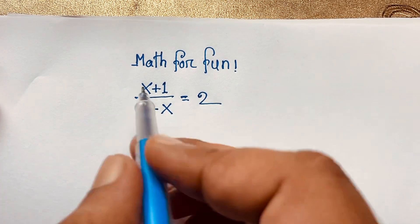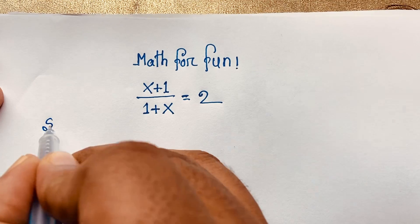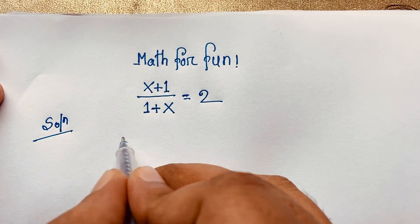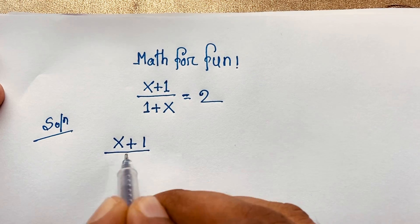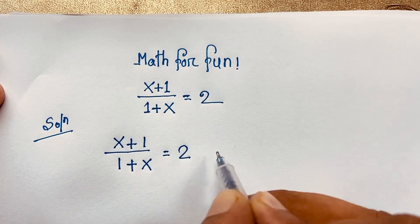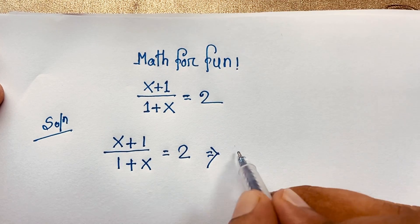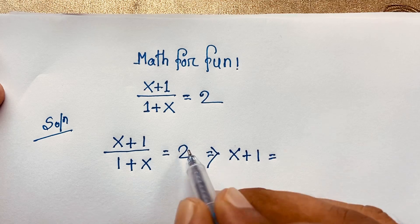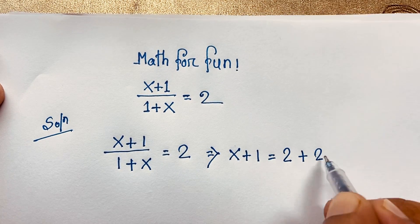So here, first of all, x plus 1 over 1 plus x is equal to 2. Then at this moment, x plus 1 is equal to 2 times 1, which is 2, and 2 times x, which is 2x.